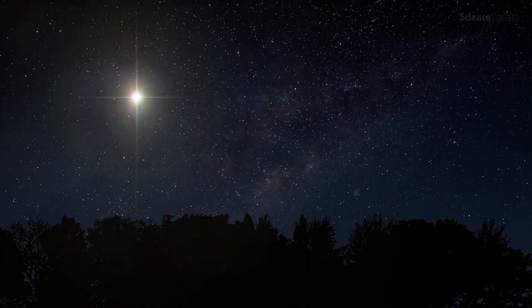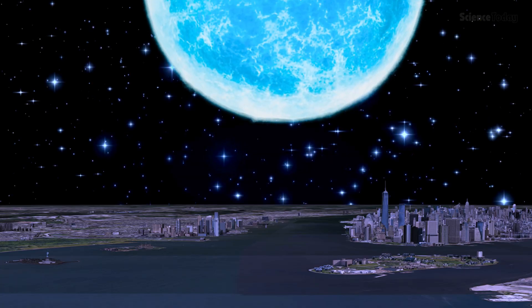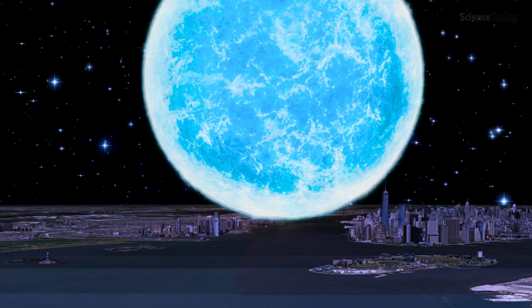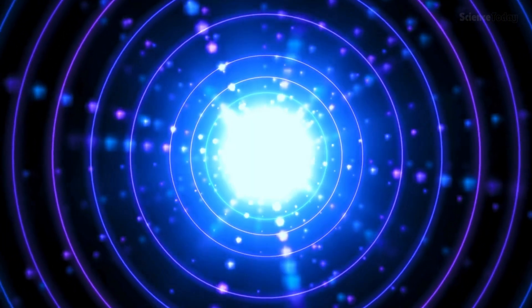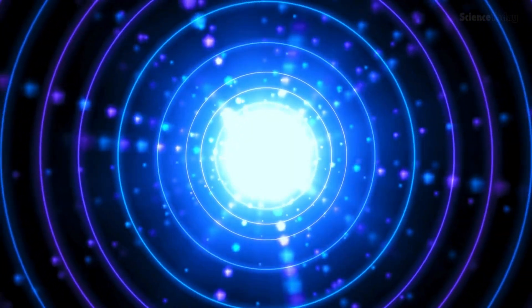These stellar remnants are a paradox of extremes, just 20 kilometers across, smaller than a city, yet weighing as much as two suns. Their gravity is so intense that time slows near their surface, and light itself bends to escape.